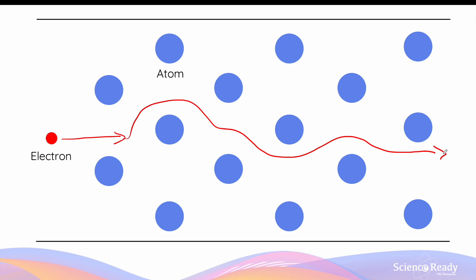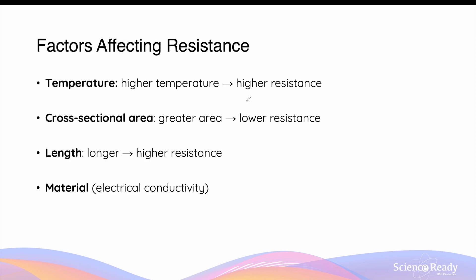Vice versa, if a material has lower electrical resistance, electrons find it much easier to pass through the structure, giving rise to a higher flow of charges over time and therefore a higher current. It is quite important to understand the numerous factors that affect the resistance of a conductor — by understanding these factors, you will understand why different materials have different resistance values.